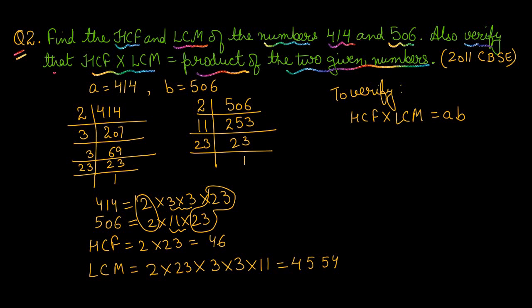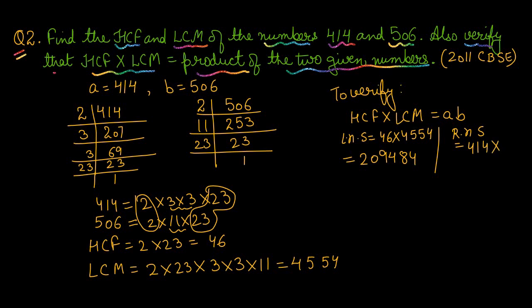In the second part, we verify that HCF × LCM = product of two numbers. Left-hand side: 46 × 4554 = 2,09,484. Right-hand side: a × b = 414 × 506 = 2,09,484. Since LHS = RHS, the result is verified.